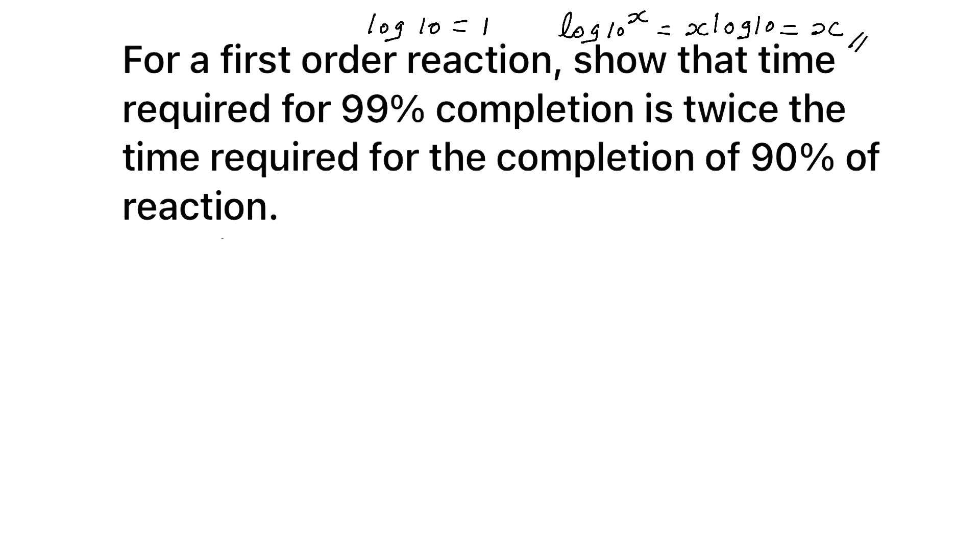For first order reaction, what is the equation for K? It is 2.303 by T log initial concentration by present concentration. Or you can put square bracket like this for present concentration. Now from that, you can make the equation for time. So it is 2.303 by K log R0 by R.